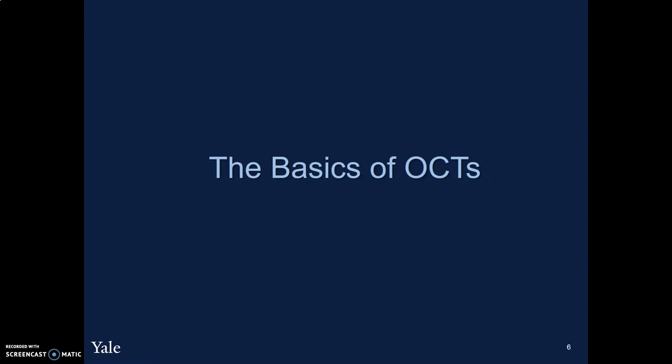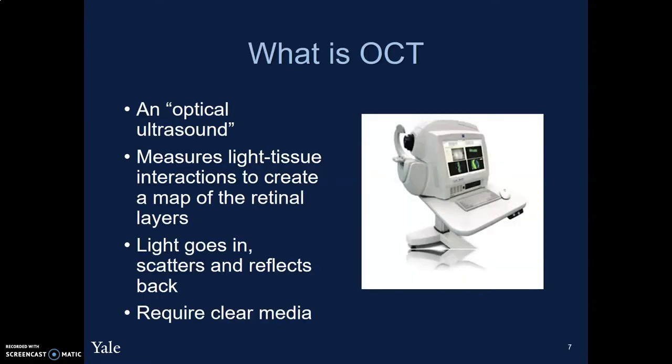A few words about the basics of OCT. What is OCT? It's a form of optical ultrasound, measuring light-tissue interactions and using those interactions and an algorithm to generate pictures of the retinal layers. The light goes in, it scatters around and reflects back at different rates based off the media that it's being reflected back upon. And because it's reliant on light, it does require clear media.